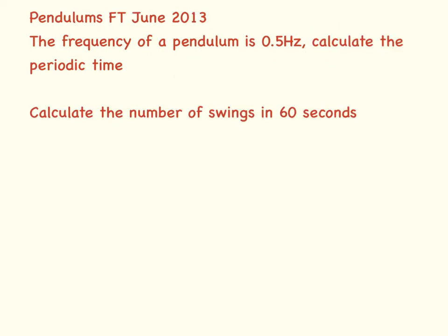The frequency of a pendulum is 0.5 hertz. Calculate the periodic time. So time equals 1 divided by frequency. Time equals 1 divided by 0.5, which equals 2 seconds.